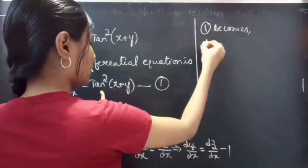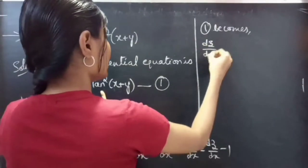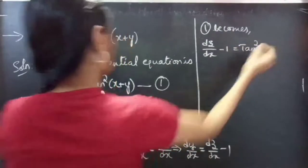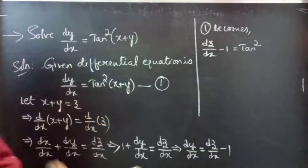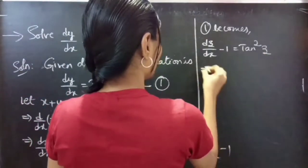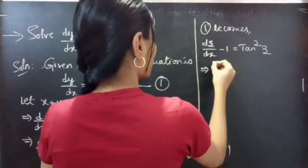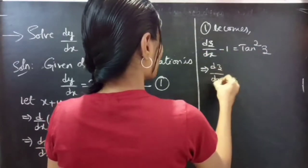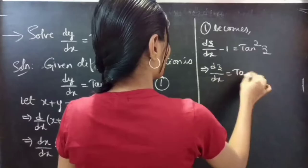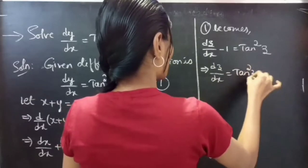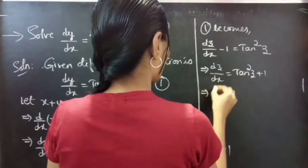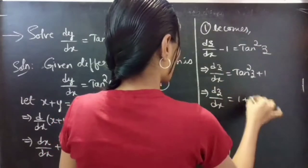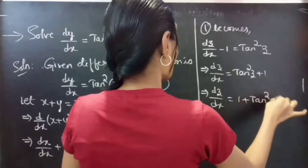You will get dz by dx minus 1 equals to tan square z. Then, take this minus 1 to the RHS. You will get dz by dx equals to tan square z plus 1, or dz by dx equals to 1 plus tan square z.